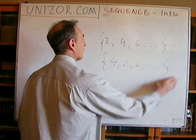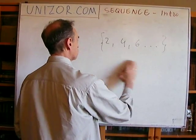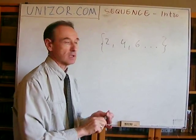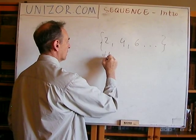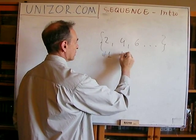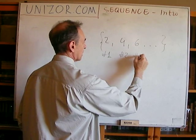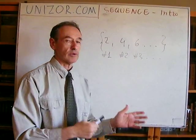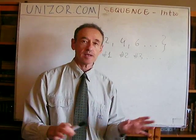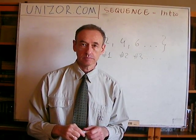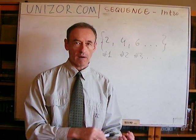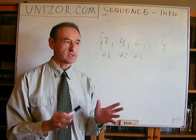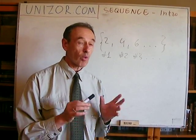But if I'm talking about a sequence of all even numbers, what I mean is that this is element number one, this is element number two, this is element number three, etc. If I position it differently — let's say four, two, etc. — that's a completely different sequence, even if the elements are the same. So when we talk about sequences, we talk about ordered sets.